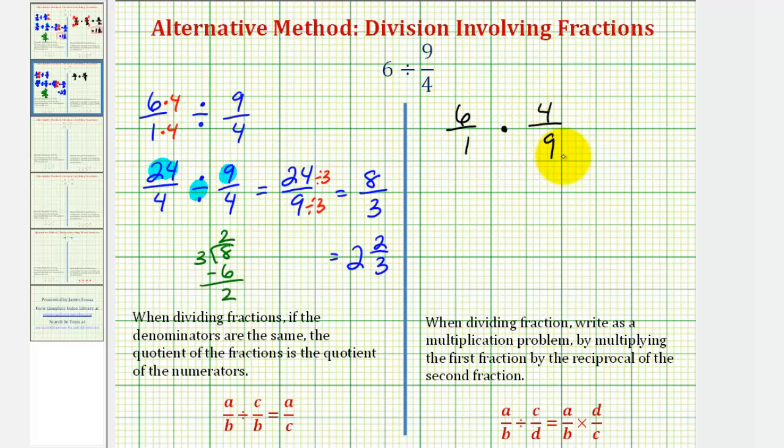And before we multiply, we want to simplify any common factors between the numerators and denominators. Notice that 6 and 9 share a common factor of 3. There are 2 threes in 6 and 3 threes in 9. And now we multiply. 2 times 4 is equal to 8, and 1 times 3 is equal to 3.